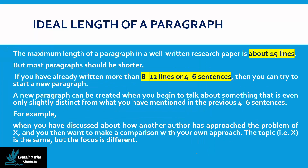Now what should be the ideal length of a paragraph? It should neither be too short nor very long, because that might distract the readers. The maximum length a paragraph can have is about 15 to 17 lines, but not all paragraphs should be this length — that is the maximum. Other paragraphs can be shorter: 8 to 12 lines or 4 to 6 lines. A research manuscript should have a blend of long and short paragraphs.